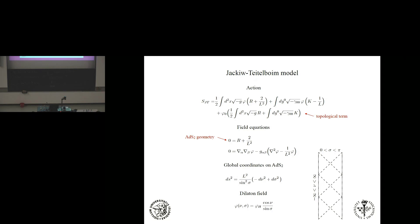The field equations of this model are very simple. In particular, because the scalar field comes in linear and without derivatives, you get as a constraint that the geometry has to be ADS2. The Einstein equation gives conditions on the dilaton field. I'll mostly be using global coordinates on ADS2 in this talk, and also introduce Schwarzschild-type coordinates for the black hole. In this coordinate system, it's a two-dimensional metric conformal to a flat metric. The conformal factor blows up at sigma equal to zero and sigma equal to pi — those are the two asymptotics of ADS2. There's a characteristic length scale, the two-dimensional ADS scale, which once we do the spherical reduction we relate to the variables of the higher dimensional theory.